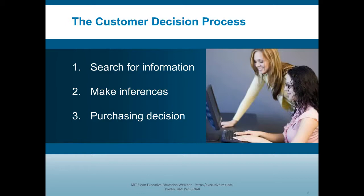The third topic is the purchasing decision itself. Given customers have either searched for information or, where they can't search, have formed inferences, now they need to make a decision — which invariably means trade-offs. Typically you can't have great quality and low prices, or if you're buying a car, you can't have good fuel economy and lots of horsepower. As a firm, we'd like to understand how customers make those trade-offs. We'll also talk about the fact that customers don't always behave consistently — they'll say one thing and then do something quite different. We're going to use this to explain why good products fail.